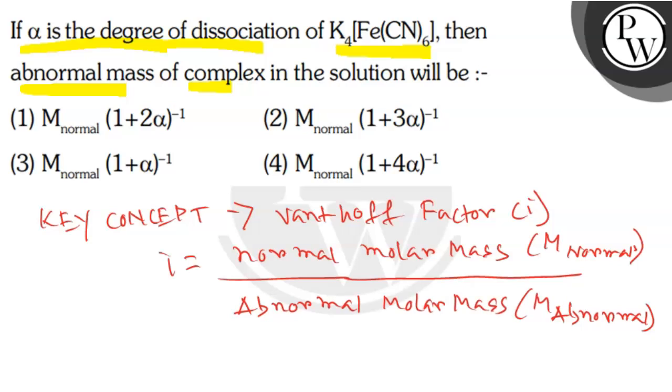Here K4[Fe(CN)6] is dissociated as K4[Fe(CN)6] gives 4K+ plus [Fe(CN)6]^4-. So number of moles is equal to 5.